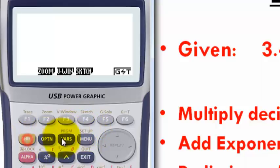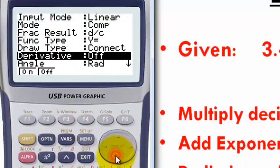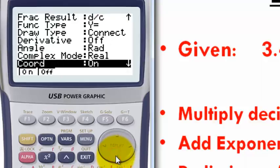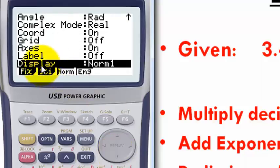So press shift menu, scroll all the way down, until you'll see display. Now right now we are in the normal mode.